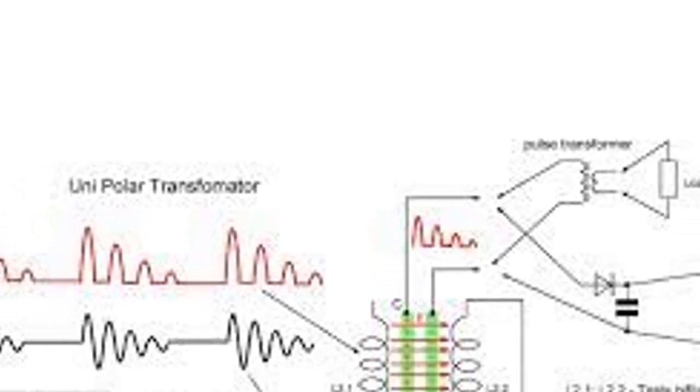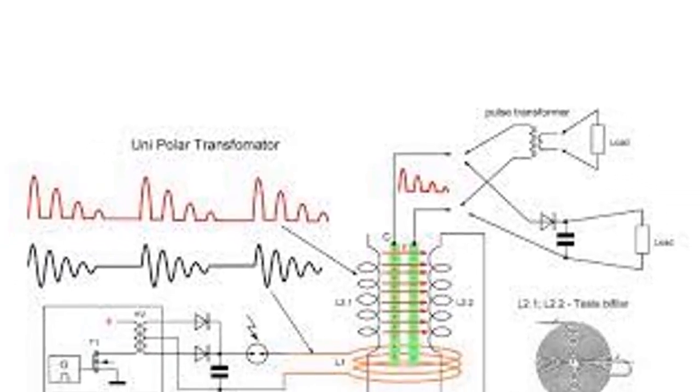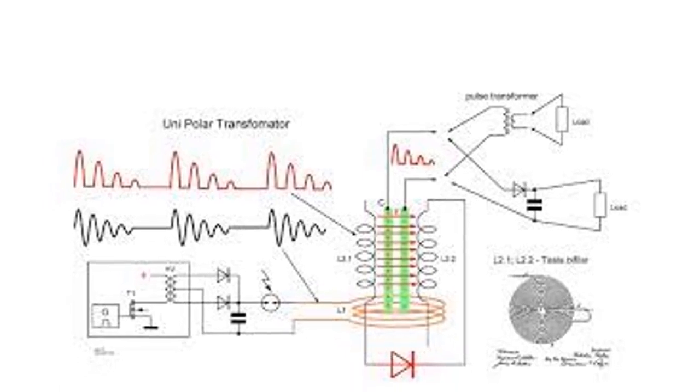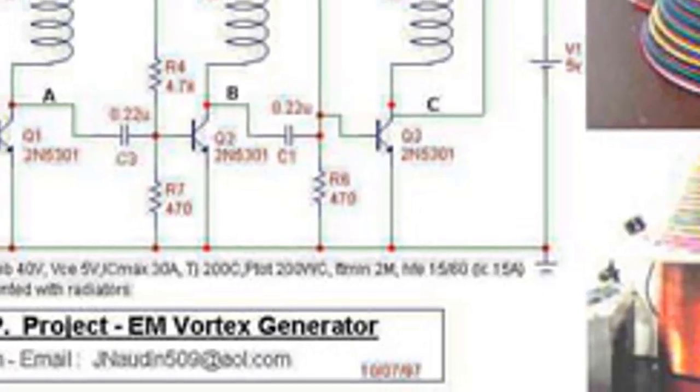The collapse field at high frequency is theorized by Nikola Tesla to generate radiant energy. The Tesla bifiler coil is a device designed to take advantage of this phenomena.